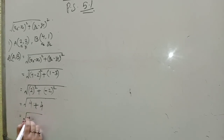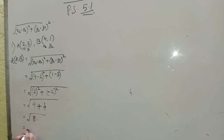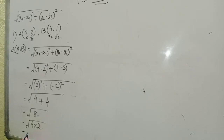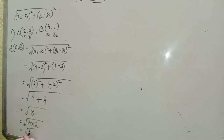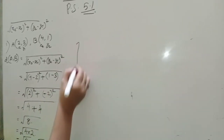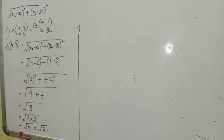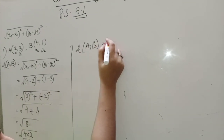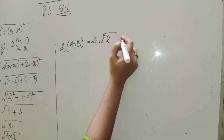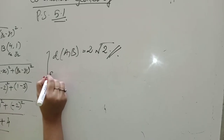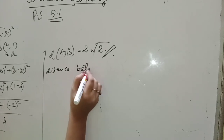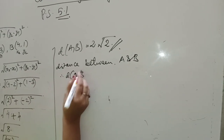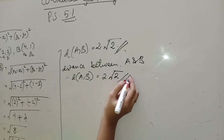So we have √(4 + 4) = √8. Now, 4 twos are 8, so √8 can be written as √(4 × 2), which equals 2√2. Therefore, the distance of AB is equal to 2√2.